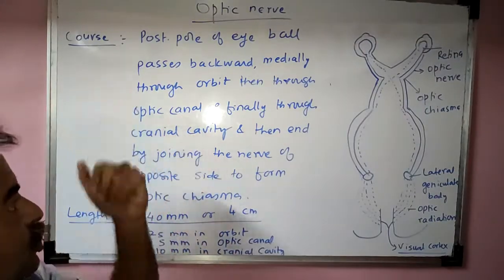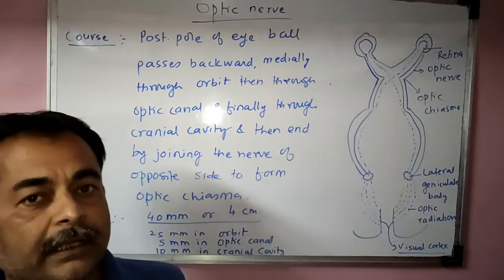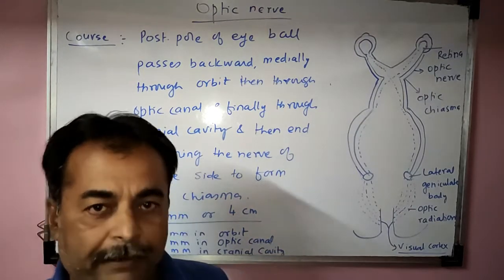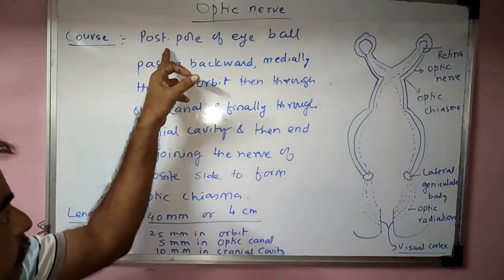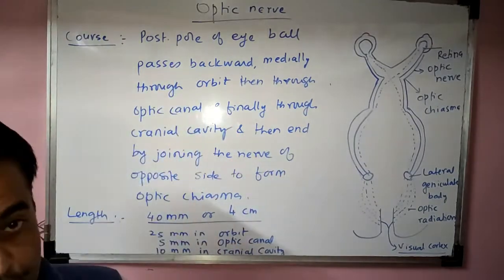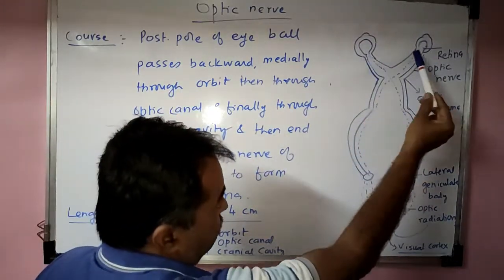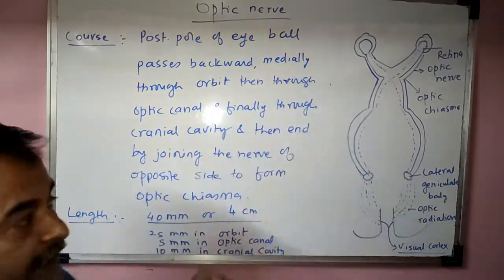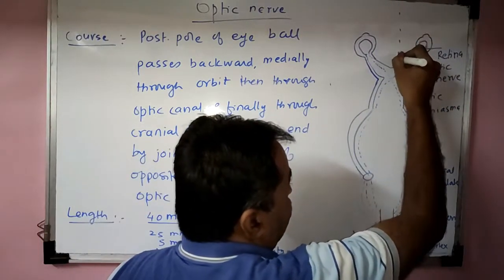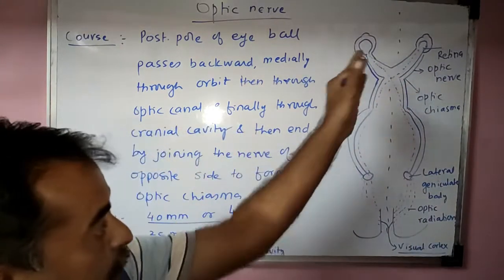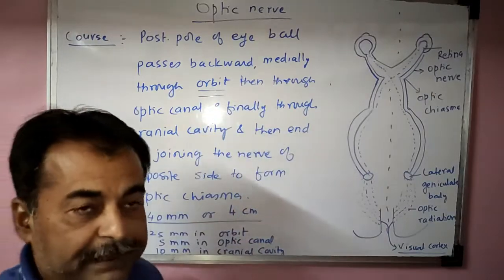Now we will see the course of the optic nerve. The optic nerve arises from the axons of the ganglionic layer of the retina, from the posterior pole of the eyeball. There are two eyeballs, right and left. From the posterior pole of each eyeball, the nerve runs backward and medially through the orbit towards the midline.